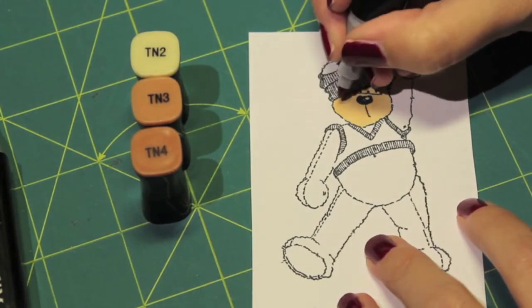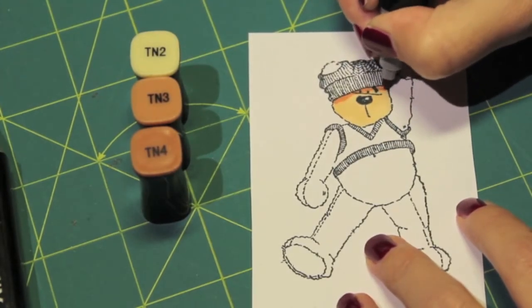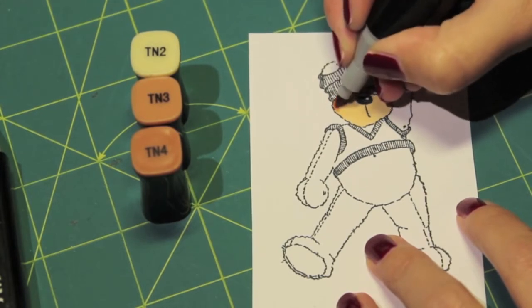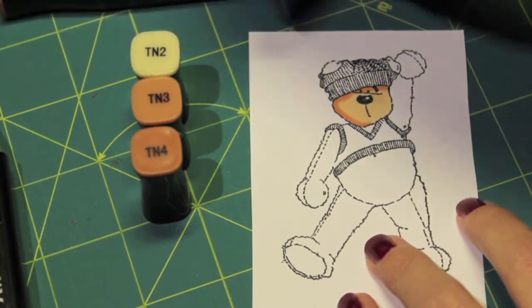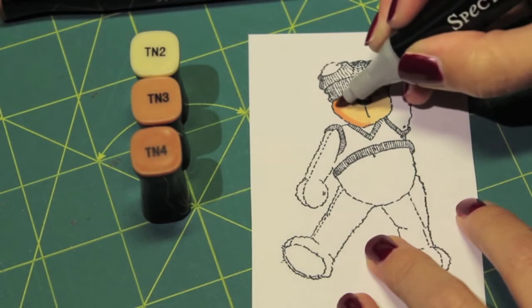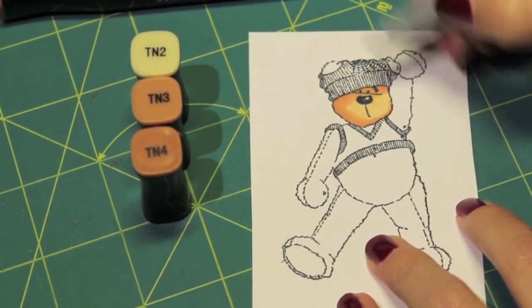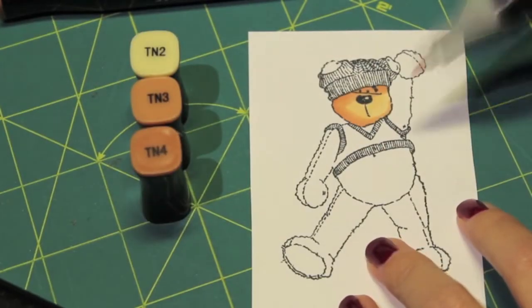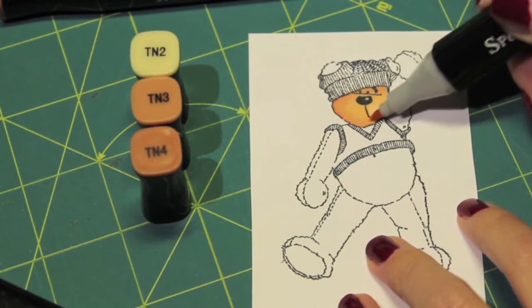Then I'm going in with the darkest color. And just doing the shadows. And then I'm going in with the next darkest color. Blending this out. And at last I do the TN2 for the blending part.